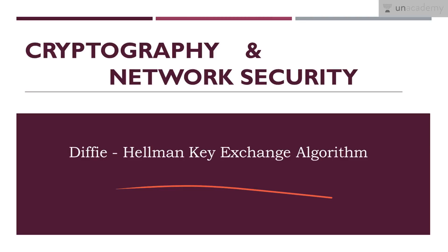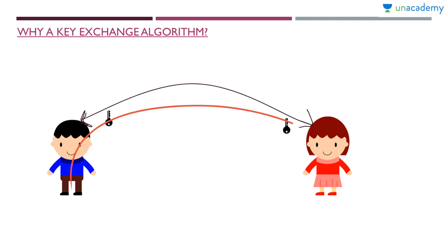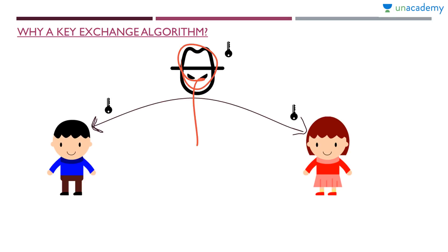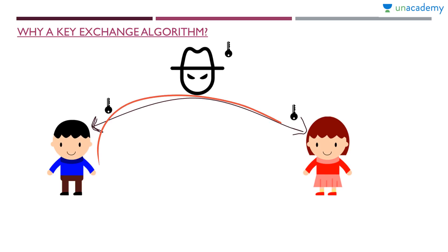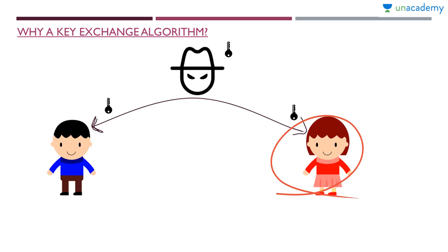The Diffie-Hellman key exchange algorithm is used to exchange keys between two parties — the sender and the receiver. The keys must be exchanged to do encryption and decryption. When the sender and receiver exchange keys, a third party attacker can come in between and also get access to that key, because the channels can be insecure and the key can be leaked. If the key gets into the hands of an attacker, he can decipher any message, impersonate, or attack in any way.